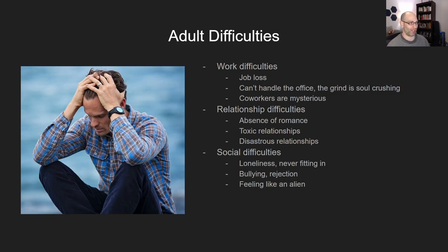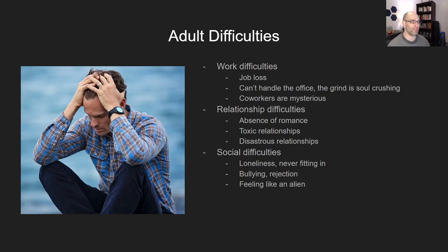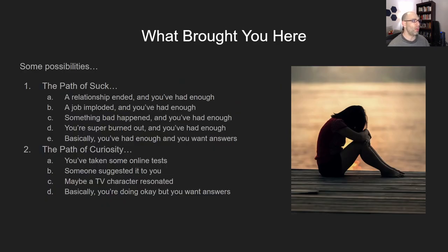Relationship difficulties: if you are perpetually alone, it's entirely possible that neurodiversity is part of the reason. Conversely, if you have many toxic or disastrous relationships, autism could also be part of that. There are plenty of autistic people who do have good relationships, but many of us have had some doozies. Social difficulties such as loneliness, never fitting in, never finding your tribe, bullying and rejection, and honestly just feeling like an alien. Nikola Tesla actually thought he was an alien because his perception of the world was so vastly different from the people around him.